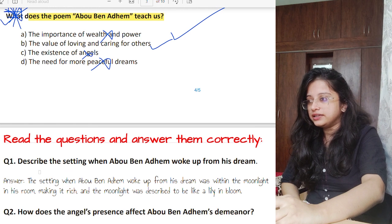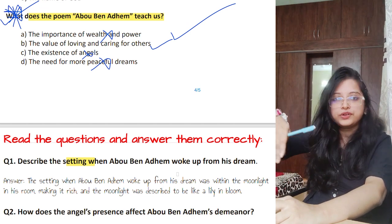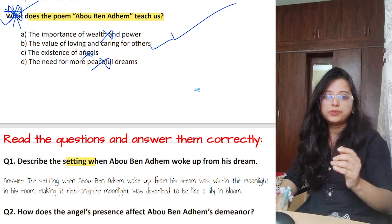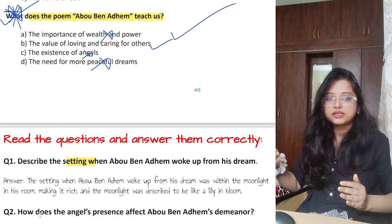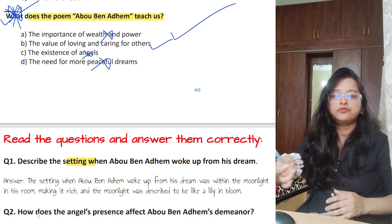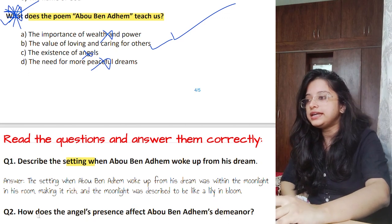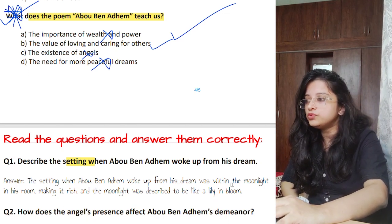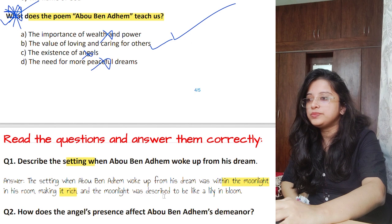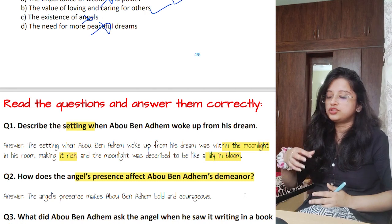Subjective question one: describe the setting. When Abu Ben Adham woke up from his dream, what was around him in the room? For example, my own setting right now includes a cabinet behind me, a bed beside me, a chair, a table, and curtains. Similarly, the setting when Abu Ben Adham woke up was: first, there was moonlight in his room making it rich; and second, the moonlight was described as being like a lily in bloom against a blue background.